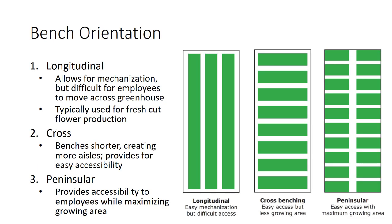Plants are grown in greenhouses either in ground beds or on benches. Ground beds are in the ground, with production taking place directly on the greenhouse floor. With benches, plants are on raised platforms that must be oriented correctly for peak efficiency. Three bench arrangements commonly used are longitudinal, cross benching, and peninsular.